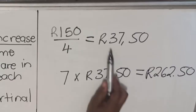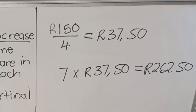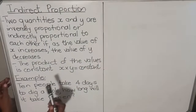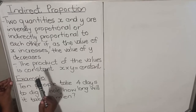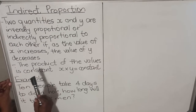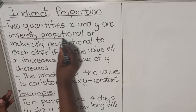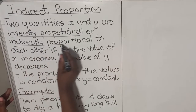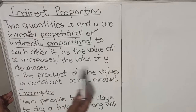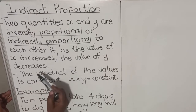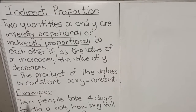You can see that this is direct proportion — the more books you have, the price goes up. You find the constant and multiply by whatever number they've given you. Now let's look at indirect or inverse proportion. Indirect proportion is when two quantities — x and y — are inversely proportional, or indirectly proportional. These mean the same thing: as the value of x increases, the value of y decreases.